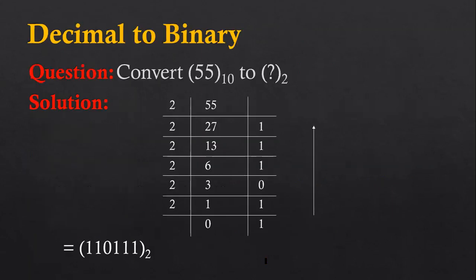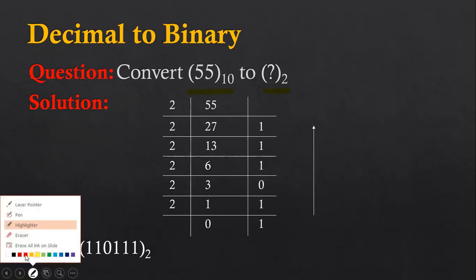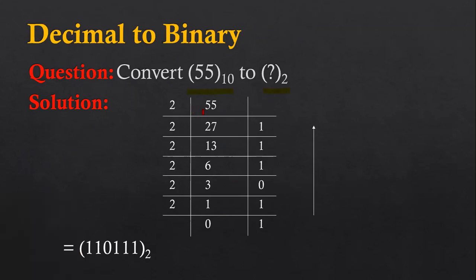Let's apply these steps with an example so that you can understand all the steps well. The first example will be converting decimal number system into binary number system. Here the question is: we have to convert 55 into binary. So we have to divide 55 by two, because we are converting it into binary. If we divide 55 by two, it is divisible 27 times.